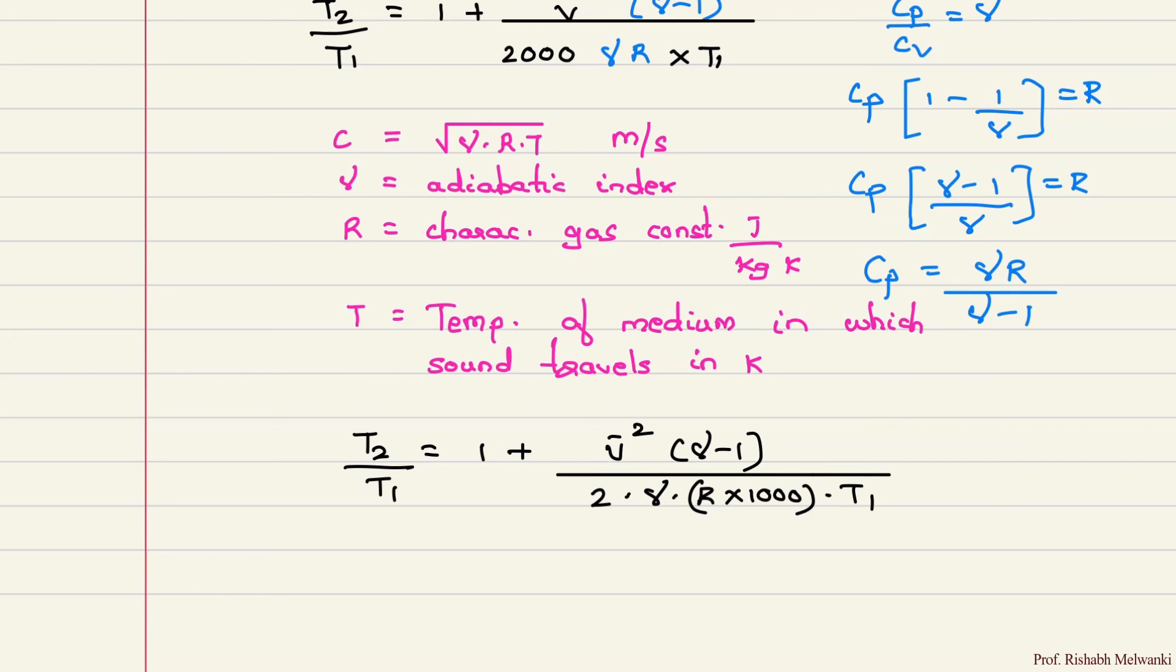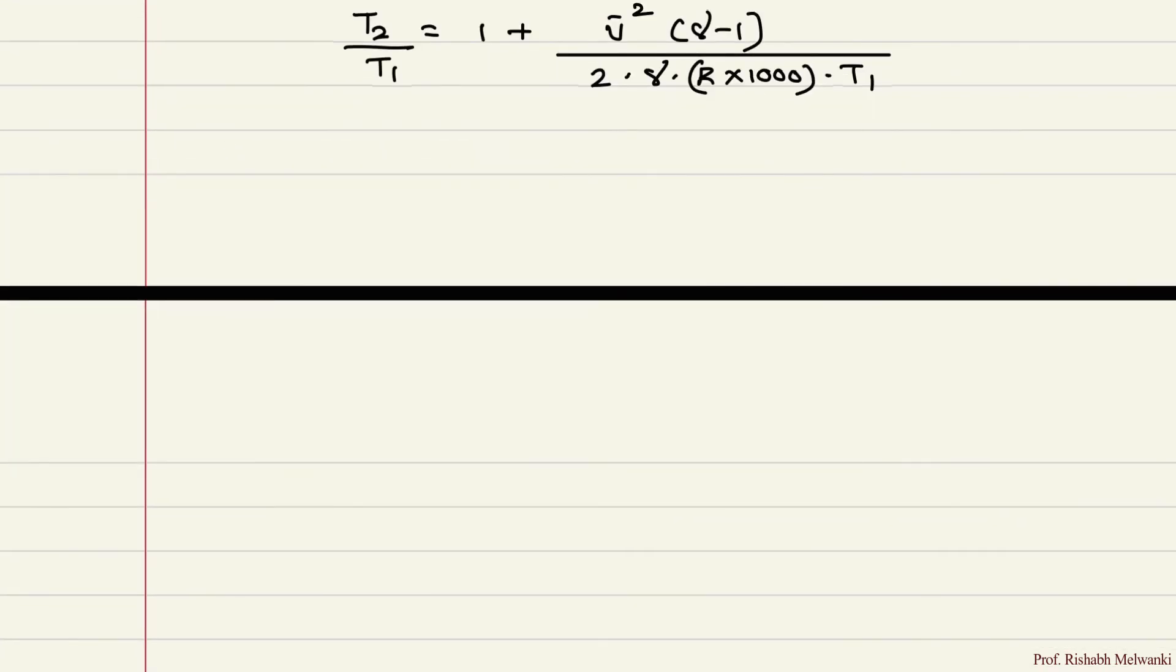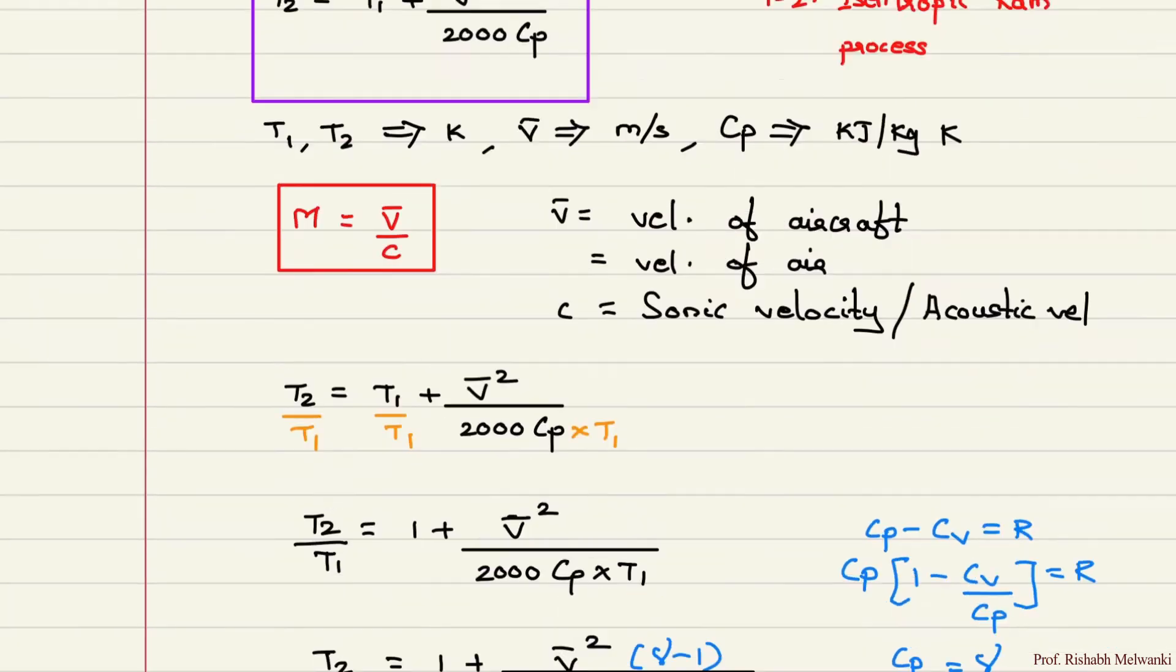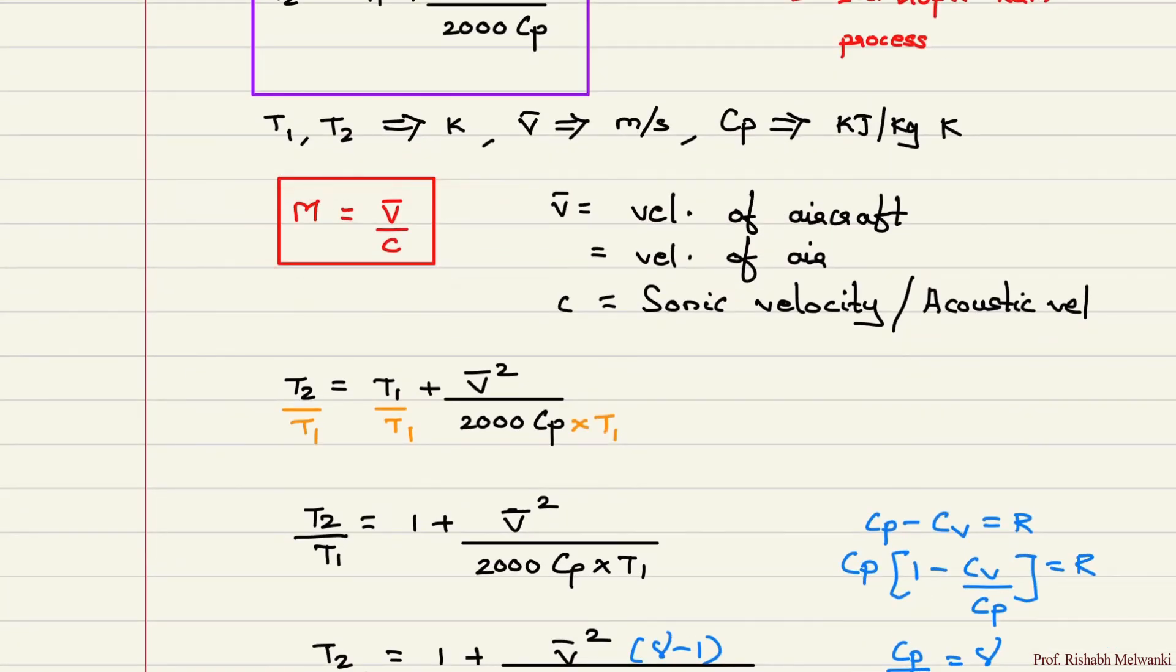So this gamma R T is C squared, velocity of sound squared. So I can write down T2 upon T1 is equal to 1 plus V bar squared gamma minus 1 upon 2 into C squared.